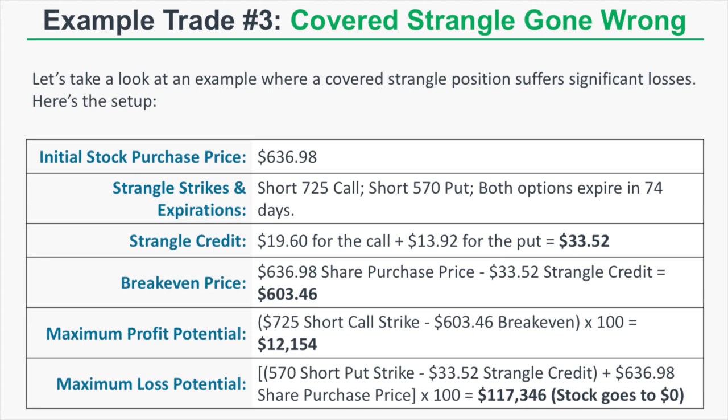In the final example, a covered strangle suffers significant losses due to a stock price decrease. The initial purchase price is $636.98. We sell the 725 call and the 570 put expiring in 74 days, collecting $19.60 for the call and $13.92 for the put, for a strangle credit of $33.52. The break-even is $636.98 minus $33.52, equaling $603.46.